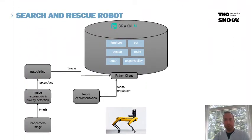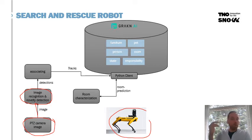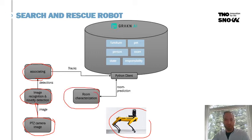Looking at the implementation picture of Spot, we see that Spot has a handheld zoom camera. Images from that camera are sent to an object recognition algorithm, which is also able to detect novelty — distinguishing whether it's the father, a family member, or just a person. To reduce the amount of detections, we also do association to filter out results. Based on the objects located in a room, we do room characterization. All that is stored in our knowledge base, which we will implement in Dragon.